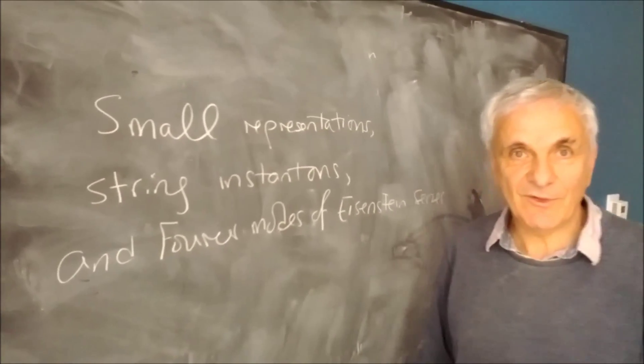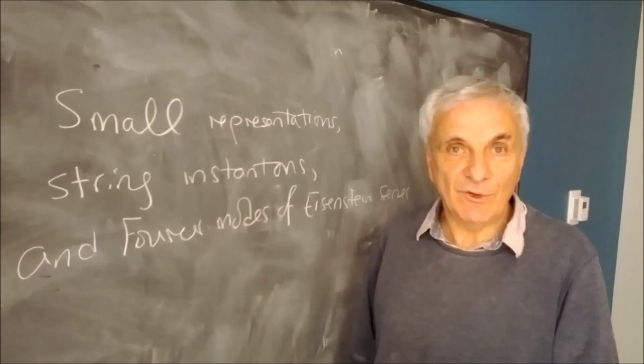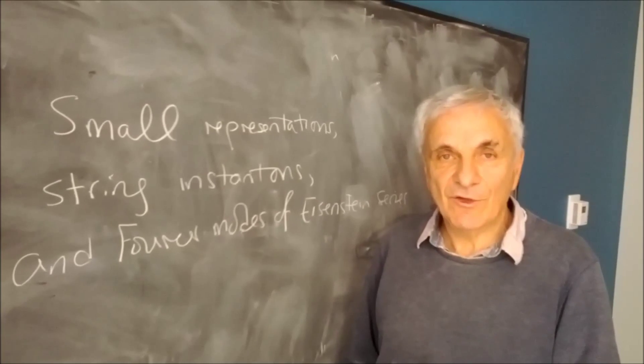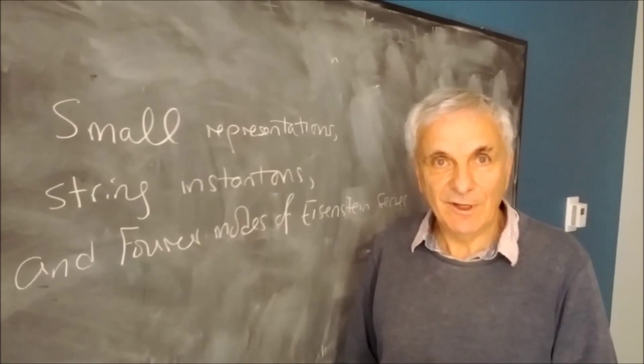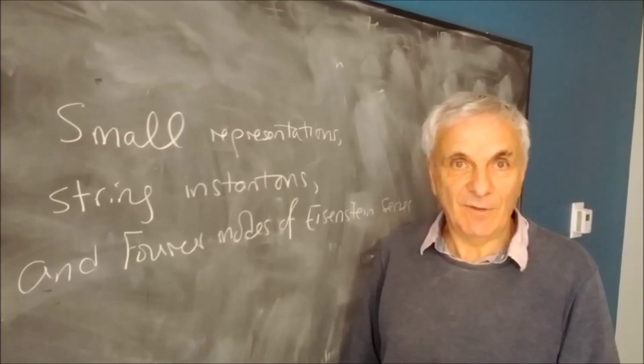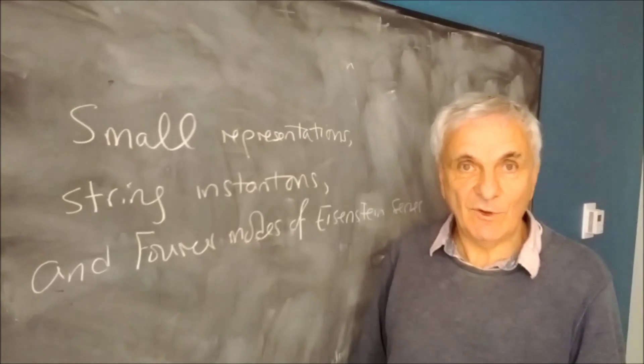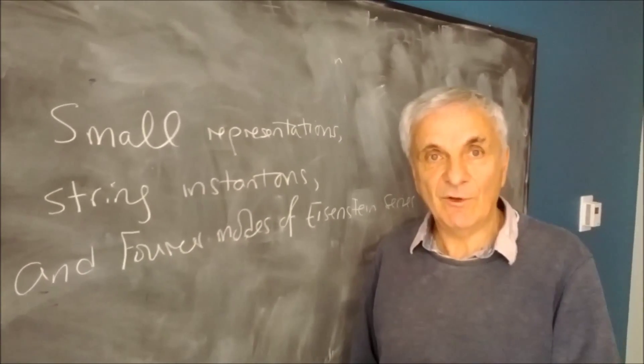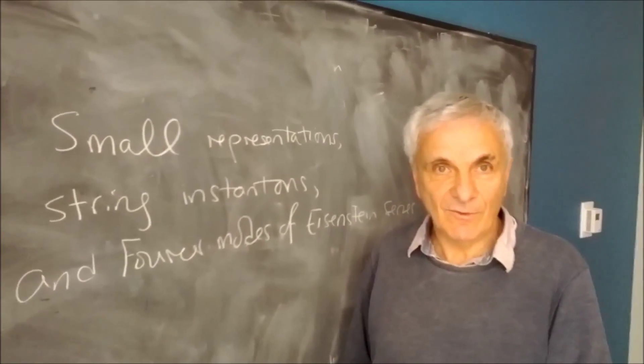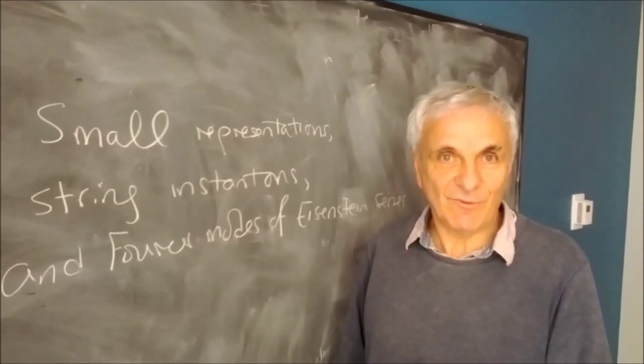This sparseness of the Fourier modes is deeply connected with the fact that these amplitudes in string theory are constrained by supersymmetry in such a way that the number of instanton orbits is very much less than it might have been. And the correspondence between the orbits of instantons and the Fourier modes of the Eisenstein series is our main result from the physics point of view.